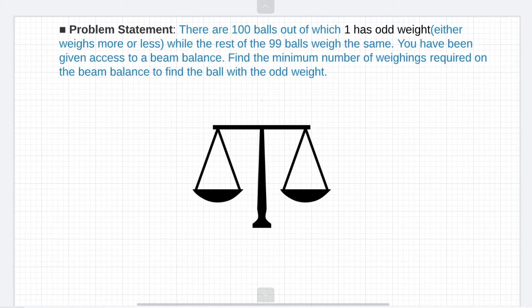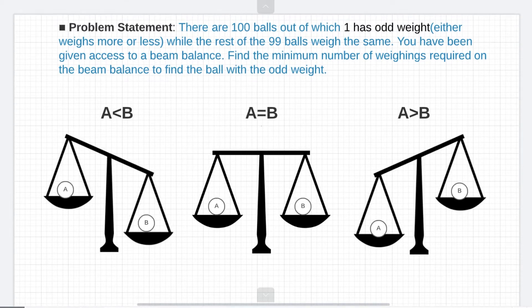Now let's see how you can use a beam balance to compare the weights of balls. So these are the three scenarios that can be there. If I just take a pair of balls out of the set and name them A and B, the following three scenarios can occur. Either B is heavier than A, in that case the beam balance will tilt towards the right. If both have the same weight then it will be balanced, and if A is heavier than B then it will be tilted towards the left side.